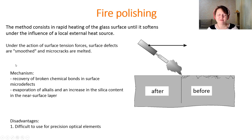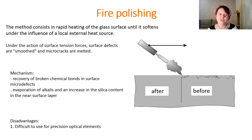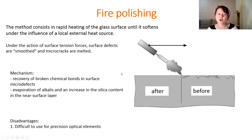The third type of polishing is fire polishing. This method consists of rapidly heating the glass surface until it softens under the influence of a local external heat source. Under the action of surface tension forces, surface defects are smoothed and micro-cracks are melted. During this process we achieve recovery of broken chemical bonds in surface micro-defects, evaporate alkali compounds, and increase the silica content in the near-surface layer. The main disadvantage is that it is difficult to use for precision optical elements.